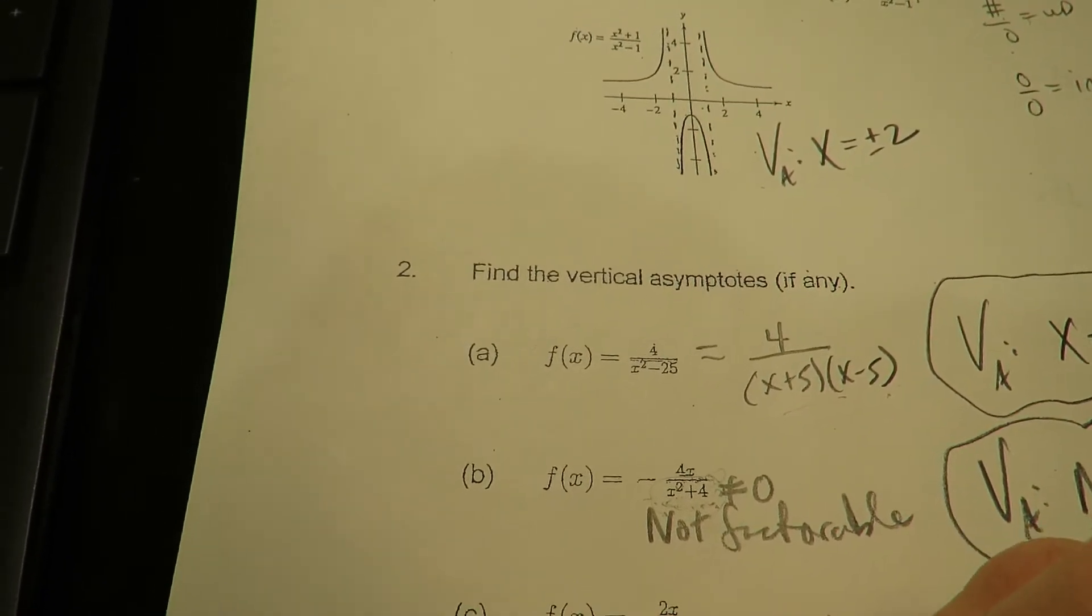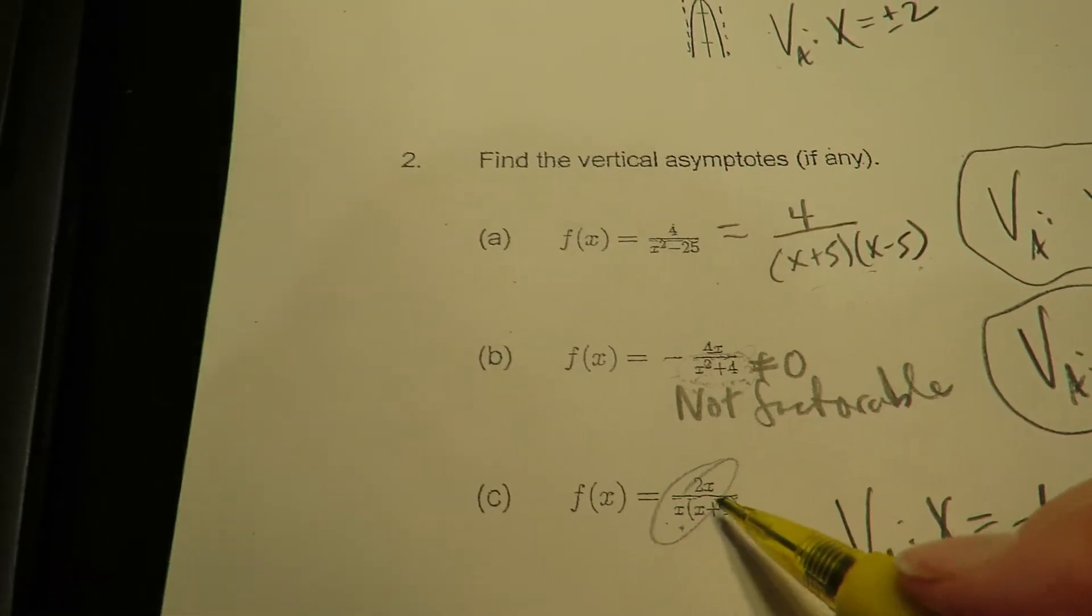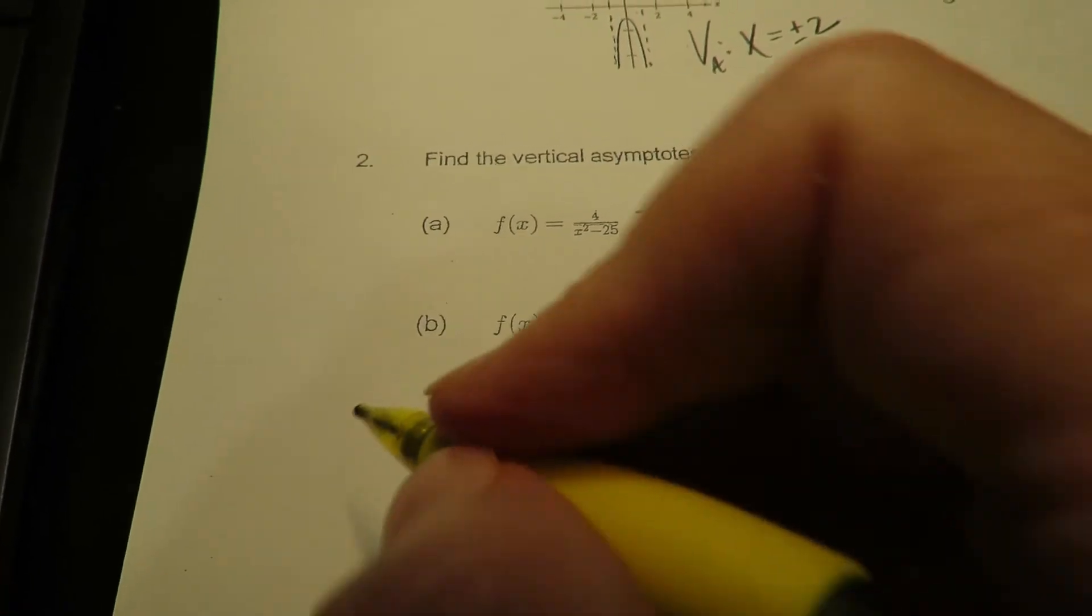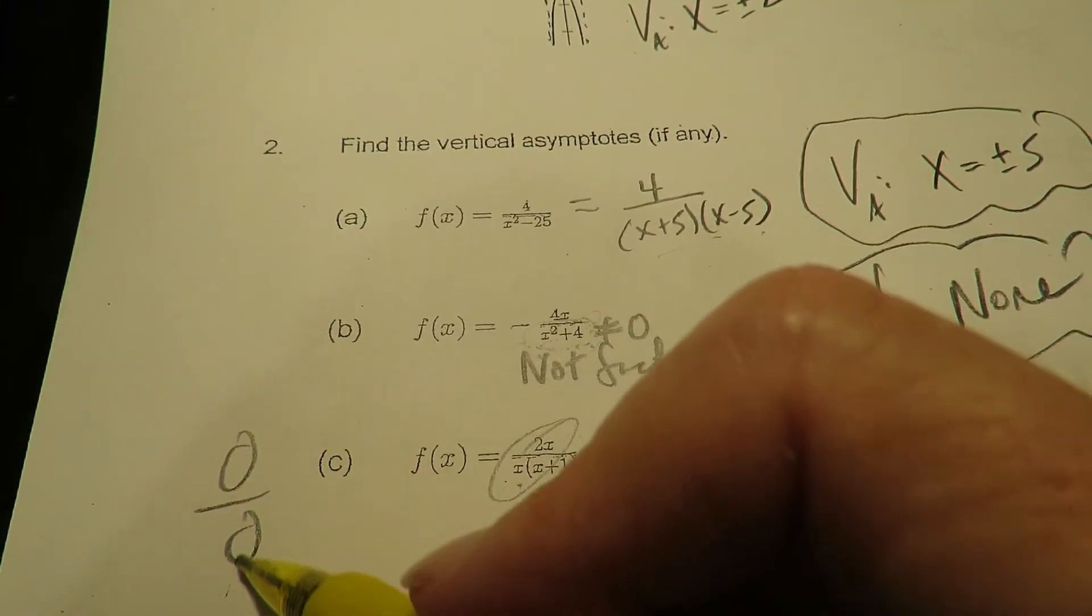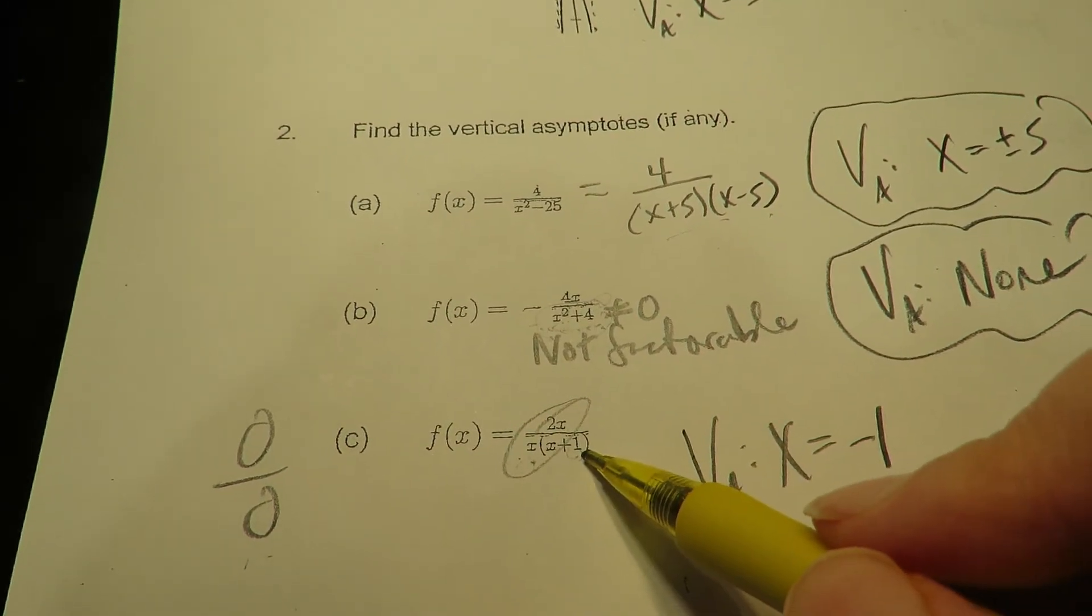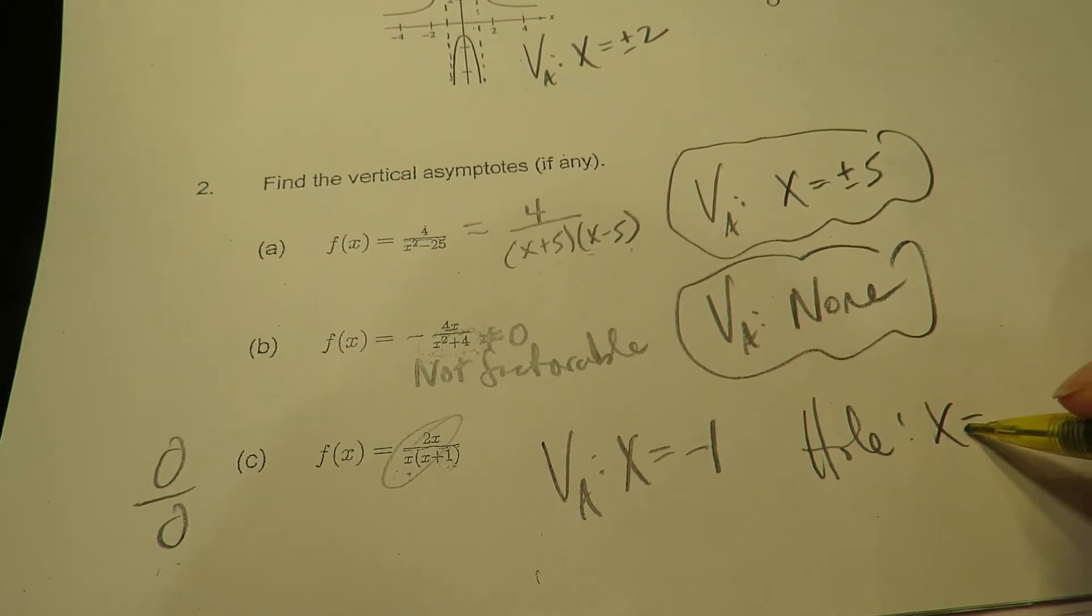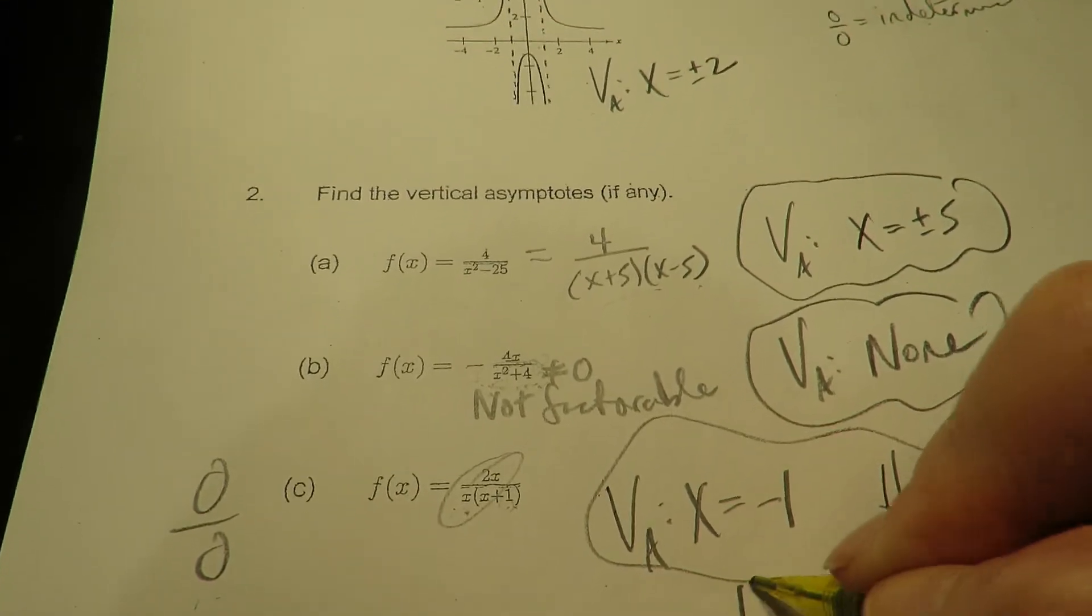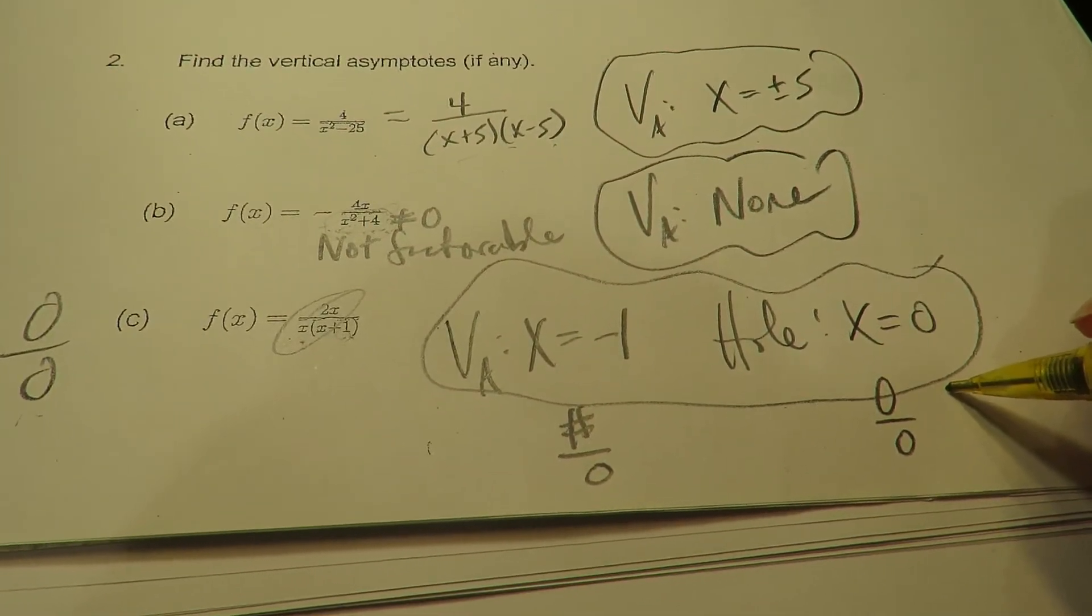And why didn't I pick this guy? Why didn't I pick x? And hopefully you caught it, because there's an x on both sides. So if you let x be 0, you're actually going to get 0 over 0. And if you get 0 over 0, what is that on this function? Hopefully you remember that's actually a hole. So this actually has a hole at 0. Again, because the VA is when you have a number over 0, and the hole is happening when you have 0 over 0.